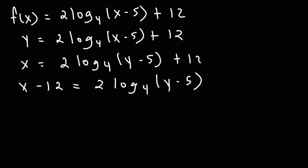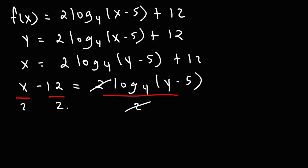The one thing that's different with this problem relative to the last problem is that I have a coefficient in front of the log. So I need to get rid of that before I can change it to exponential form. I'm going to divide both sides by 2. On the left side, I'm going to divide each of these terms separately by 2, so the 2s will cancel on the right. On the left, x over 2 is the same as 1 half x, and 12 divided by 2 is 6. And that's going to equal log base 4 of y minus 5.